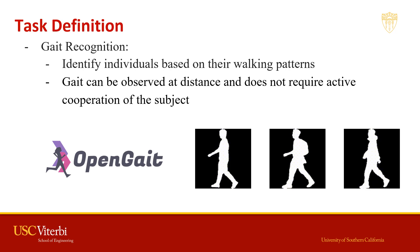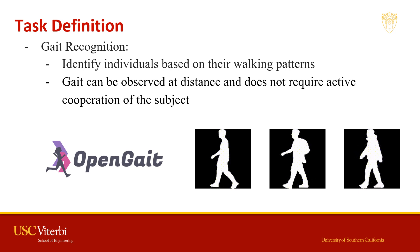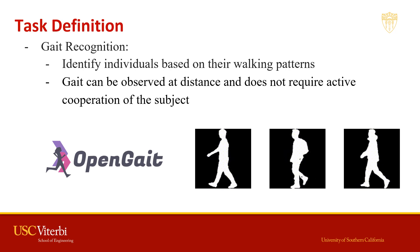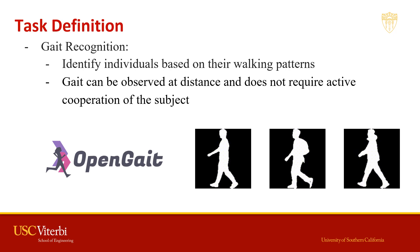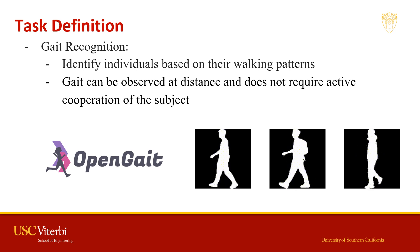We begin with the definition of gait recognition. Gait recognition is to identify individuals based on their walking patterns. We show three examples provided by OpenGait. Compared with other biometrics, gait has the advantage of being observed from a distance and does not require the active cooperation of the subject.